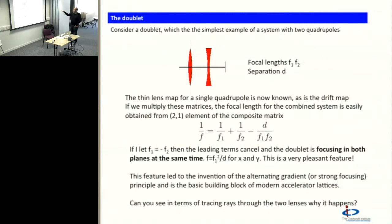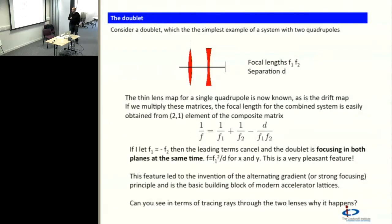It turns out you can easily construct two quadrupoles together of alternate polarity, and the net effect is to focus in both planes. So you get what's called a quadrupole doublet, and this gives you focusing horizontally and vertically.